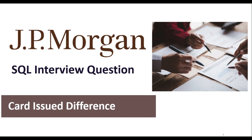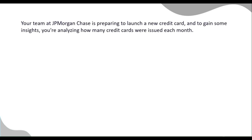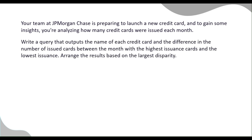Hello everyone, welcome back to my channel. In today's video we are going to solve another SQL interview question that has been asked at JP Morgan. The question is on calculating the difference in the number of credit cards issued each month. Imagine your team at JP Morgan is preparing to launch a new credit card, and you are analyzing how many credit cards were issued each month. Your task is to write a query that outputs the name of each credit card and the difference in the number of issued cards between the month with the highest issuance and the lowest issuance, arranged by the largest disparity.